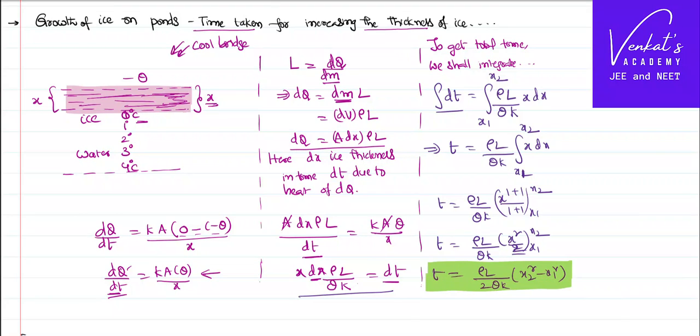That is the time required so that the thickness of the ice bed varies from x1 to x2 in this given time. Where rho is the density of ice, latent heat of ice, theta is the temperature on the surface, k is the coefficient of thermal conductivity of ice—all are constants. From all this I can write: time taken for the formation of ice to increase its thickness from x1 to x2 is directly proportional to x2^2 - x1^2. That is the relation that I want to derive in this video.